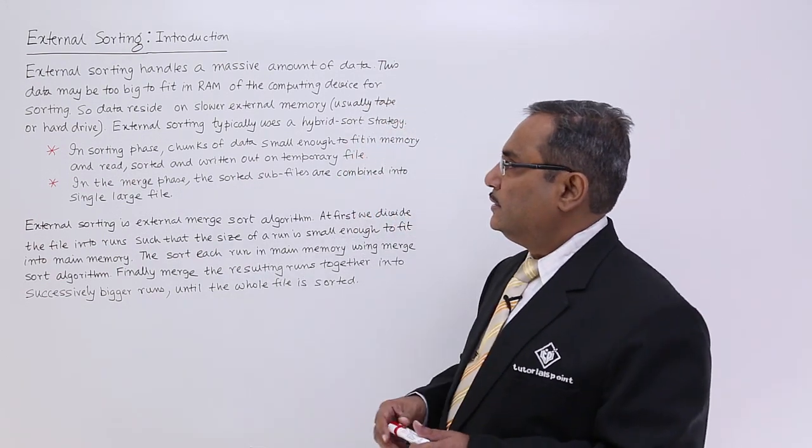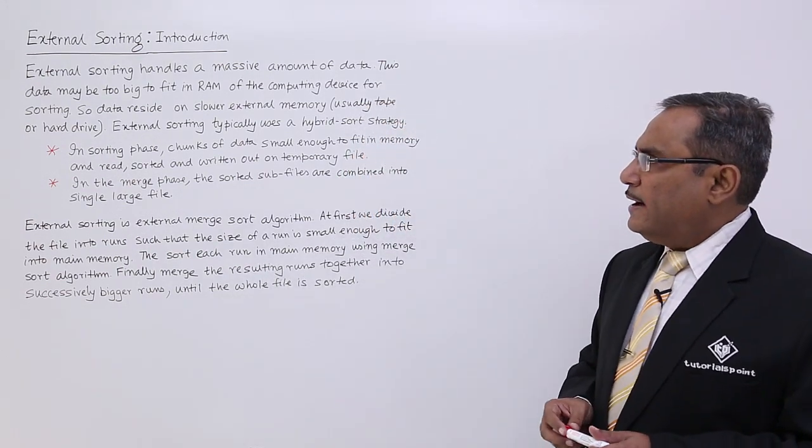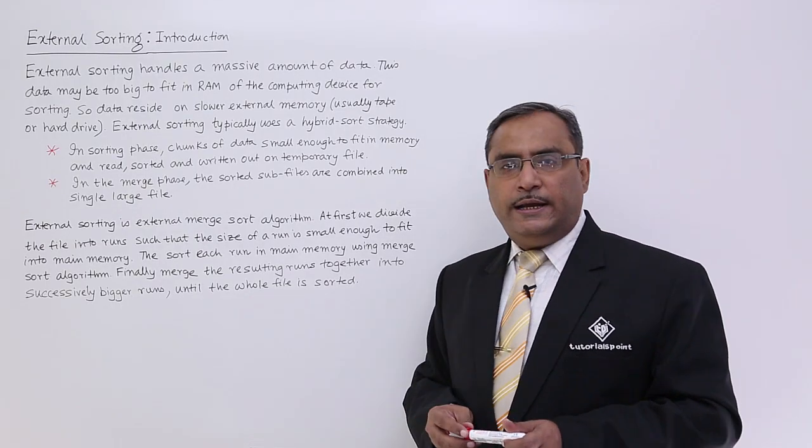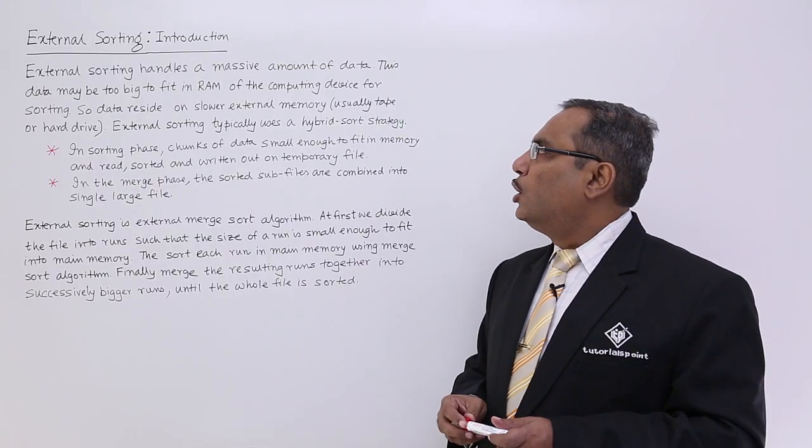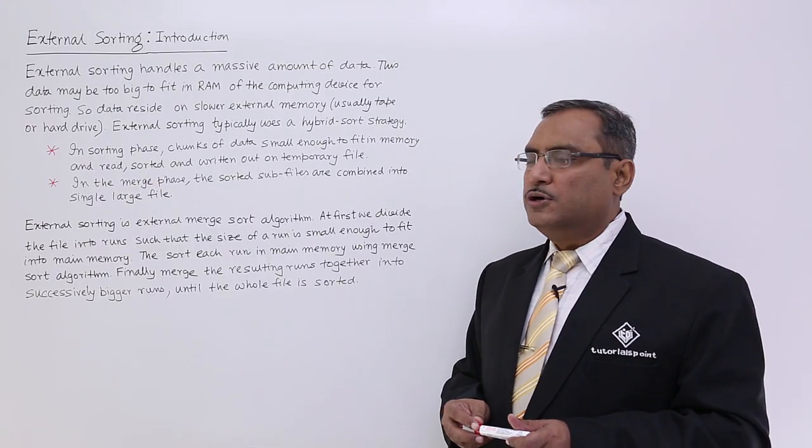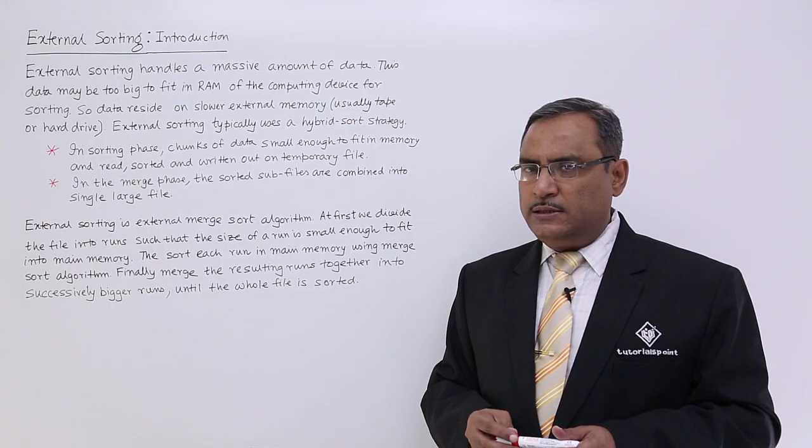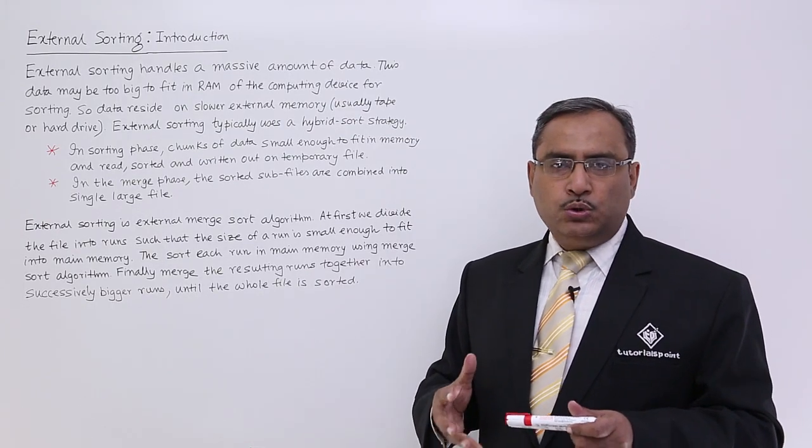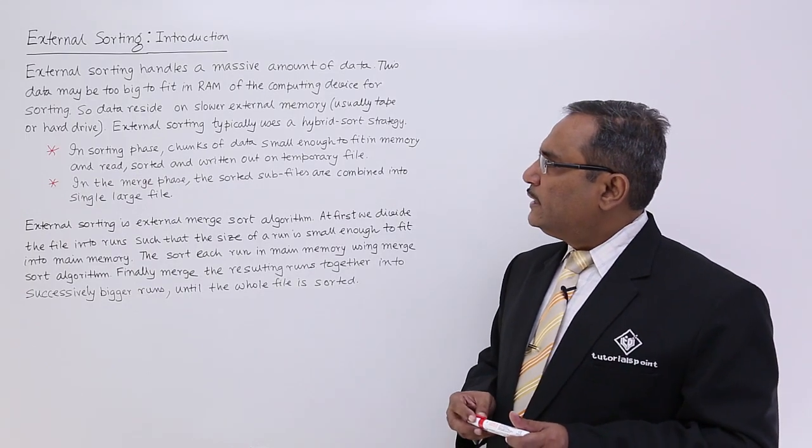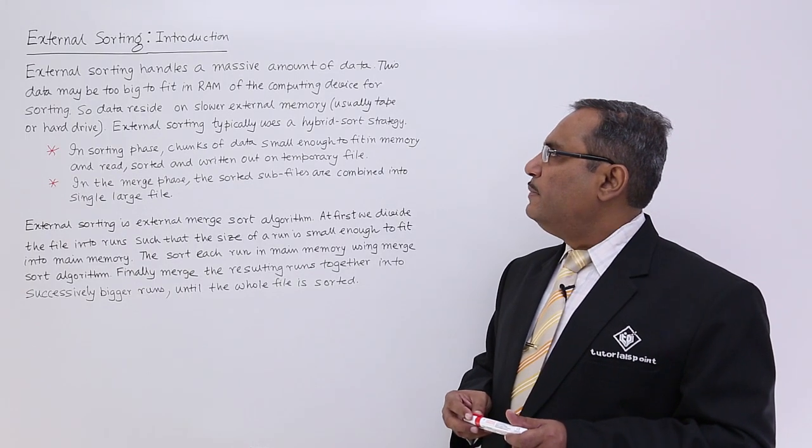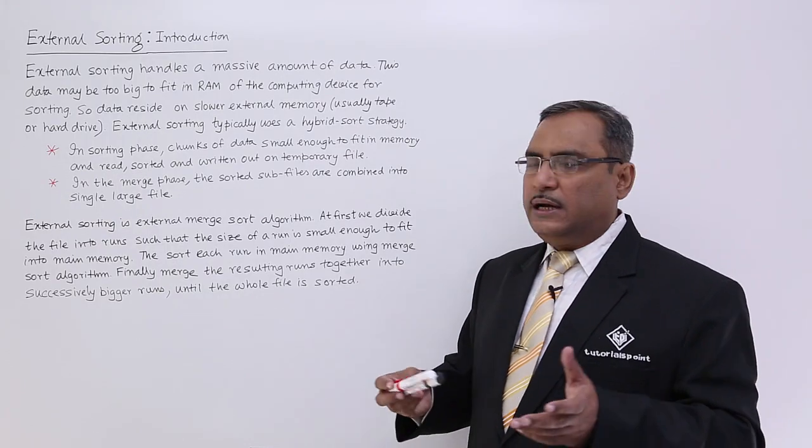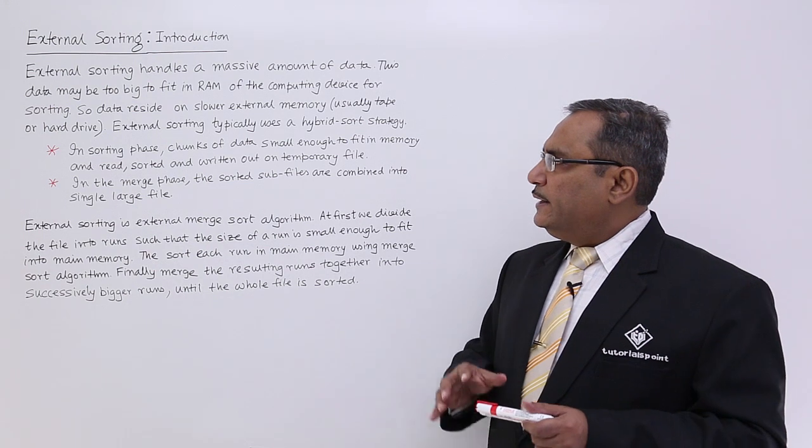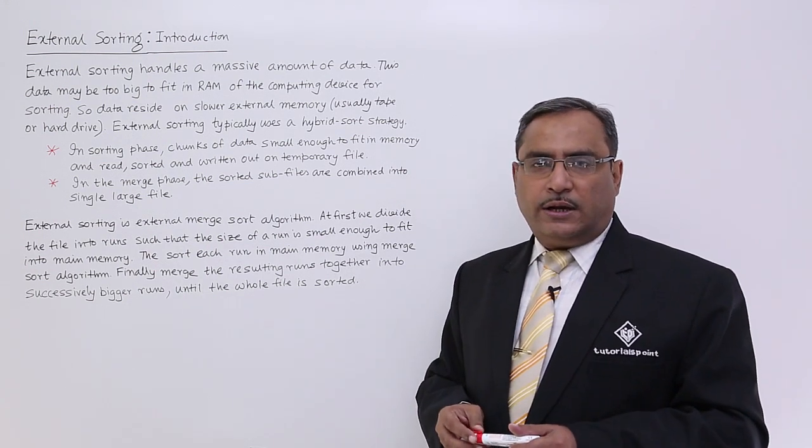External sorting handles a massive amount of data. This data may be too big to fit in RAM or the memory of the computing device for sorting. That is why the memory is not capable to keep all that huge amount of data at the same time. Data resides on the slower external memory, usually tape or say hard drive. Nowadays it is hard drive obviously.